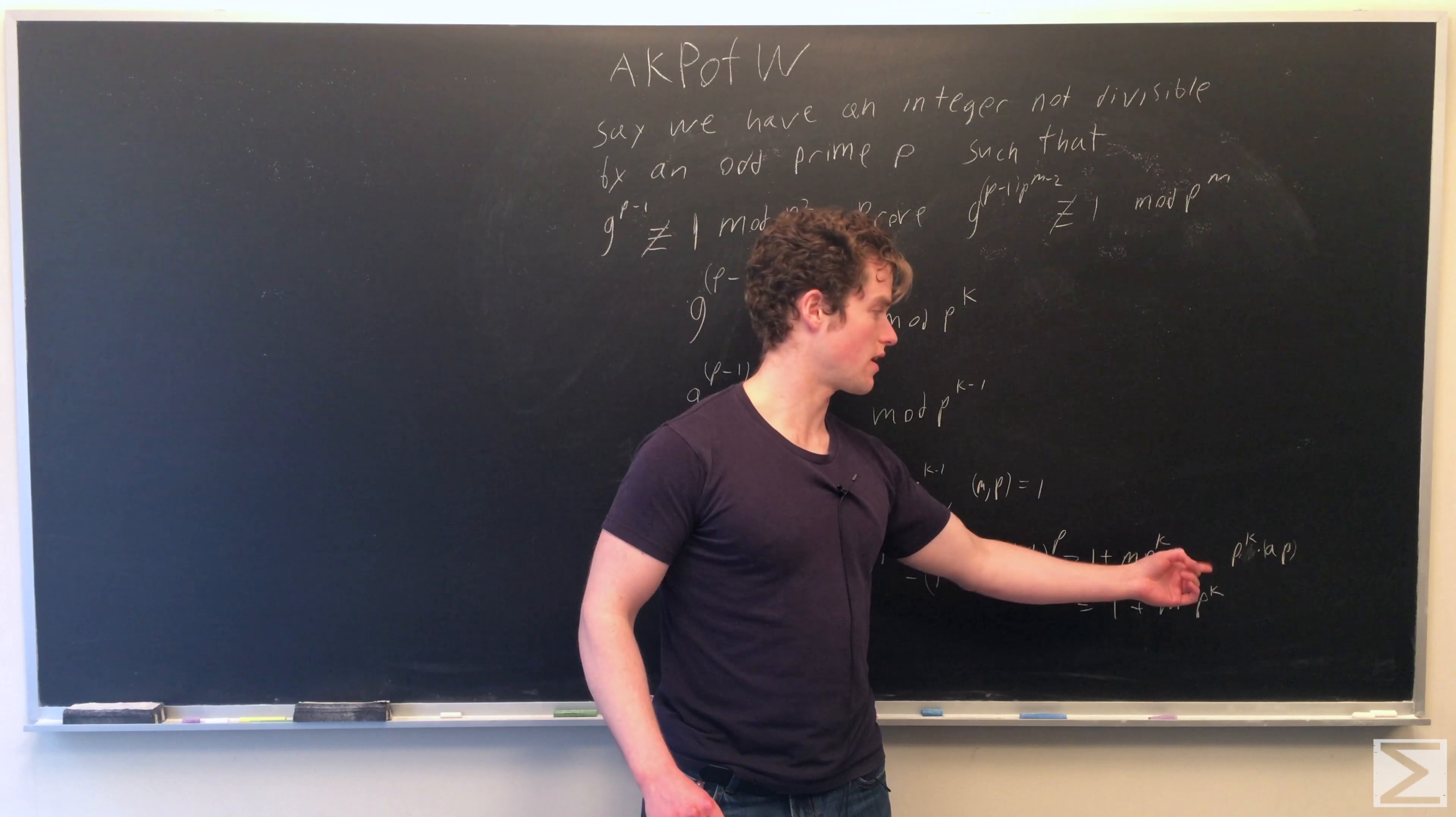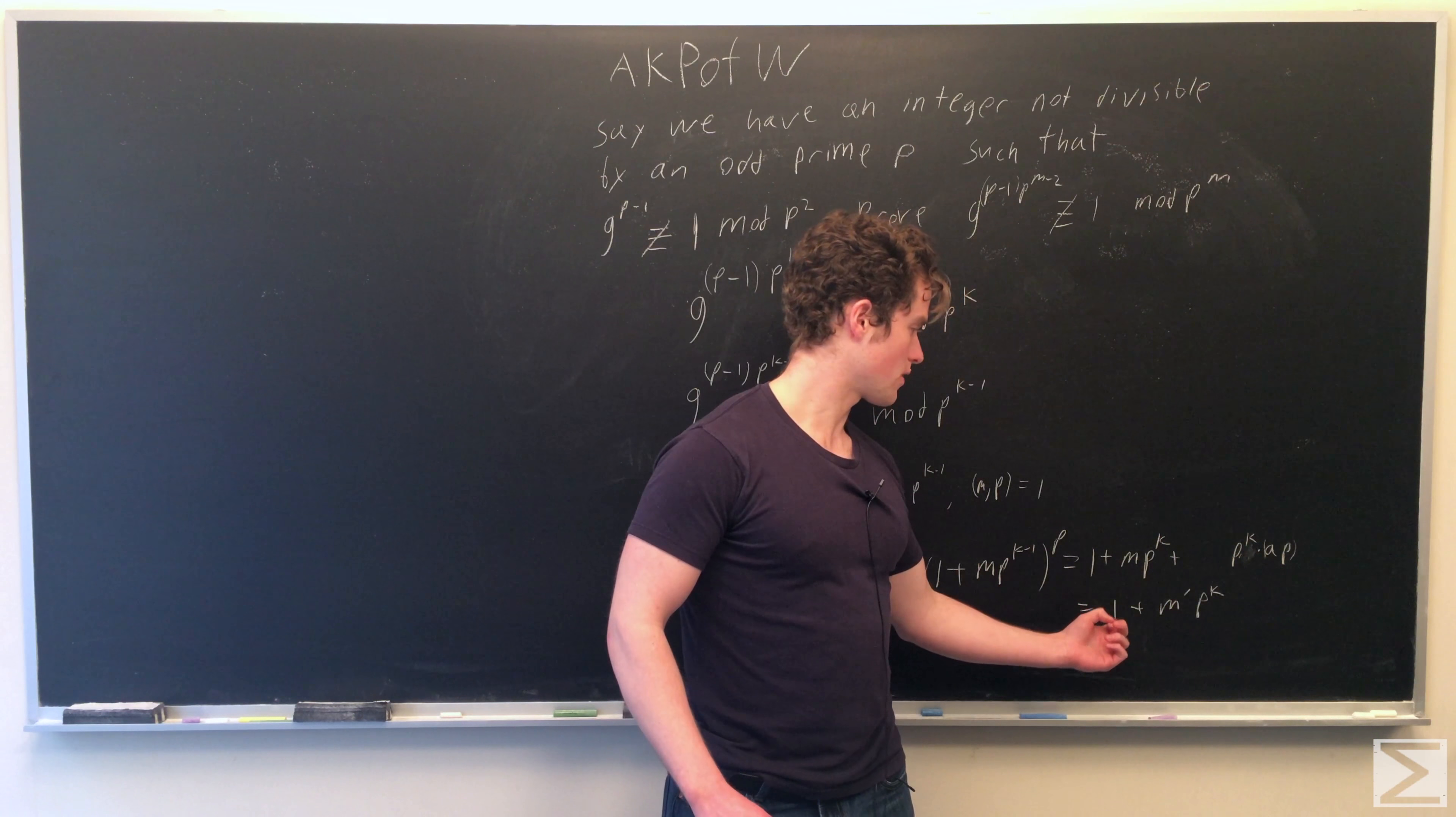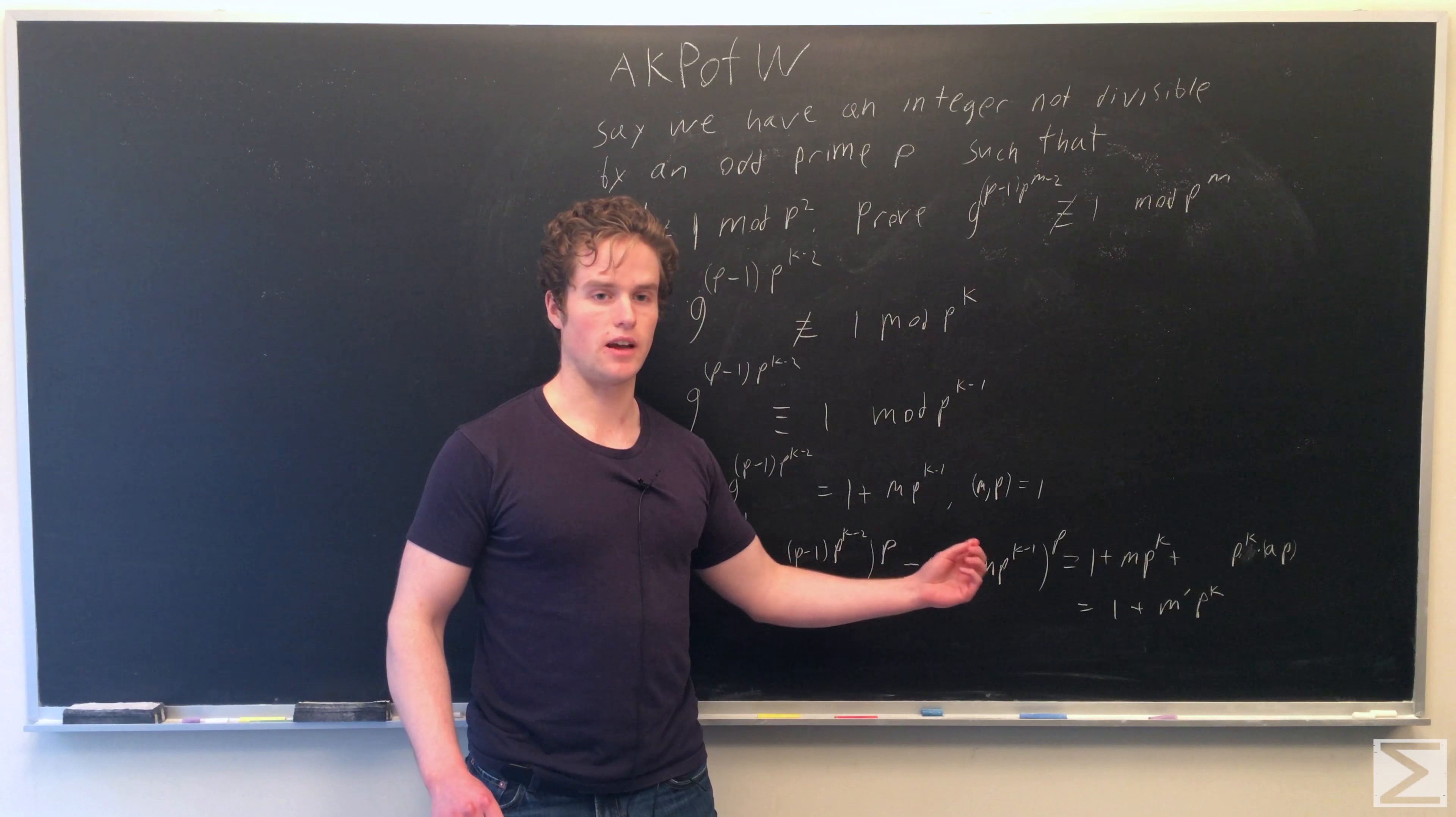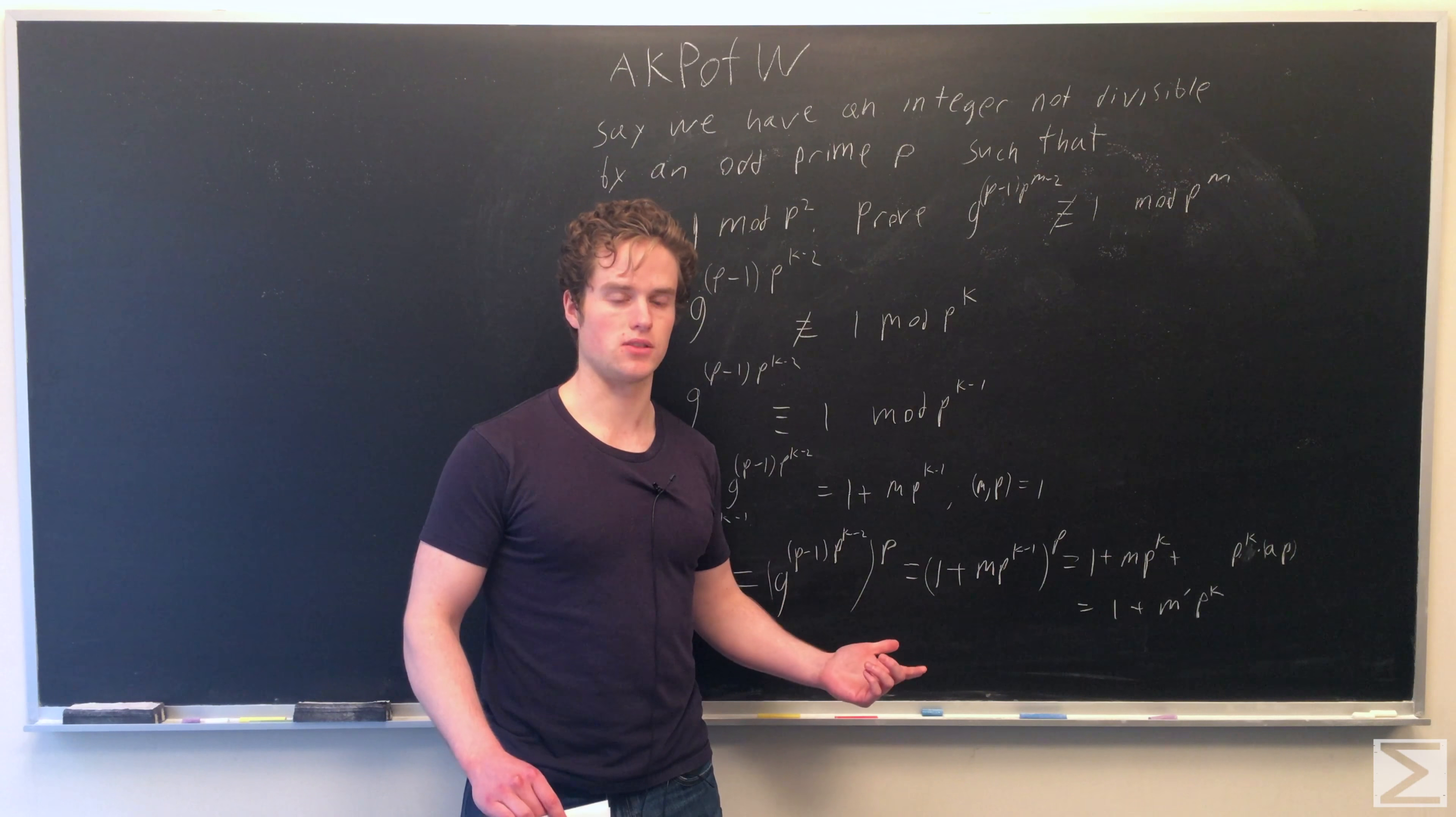So we can represent it as p^k·a·p, where a is some integer. We can simplify this to 1 + p^k·(m + a·p). Since m does not have a divisor of p, m + a·p also does not have a divisor of p.